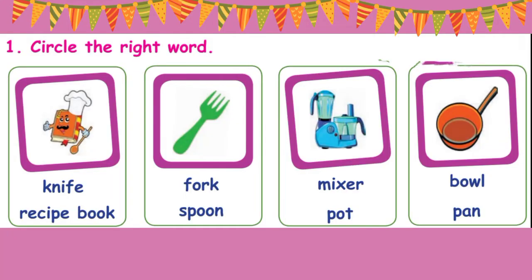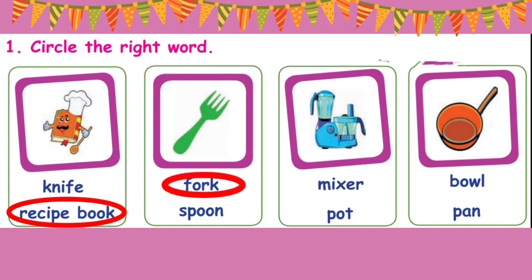First, let's circle the right word. See the first picture. What is this? Knife or recipe book? Yes, you are correct. It's a recipe book. Circle it. Next, see the second picture. Fork or spoon? Yes, fork. Circle it.